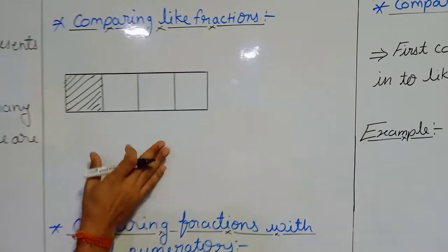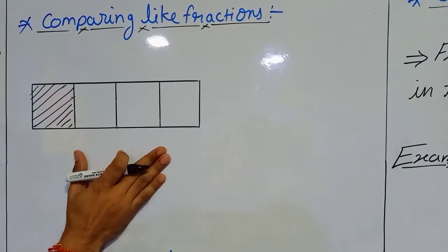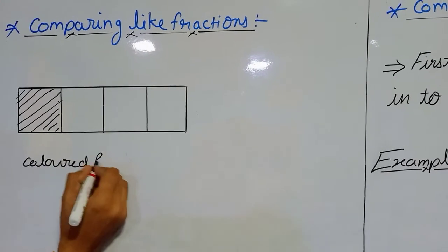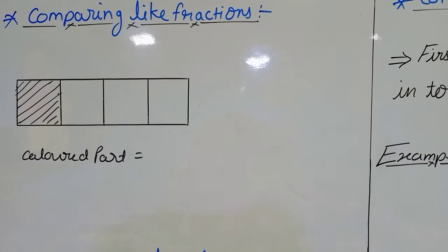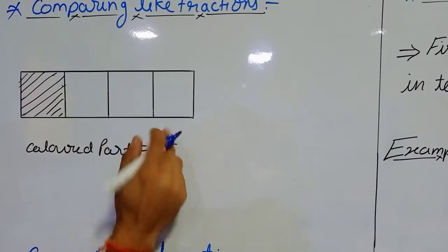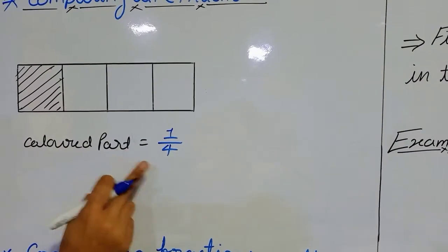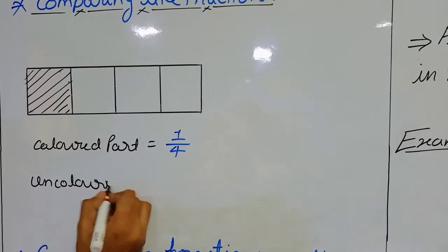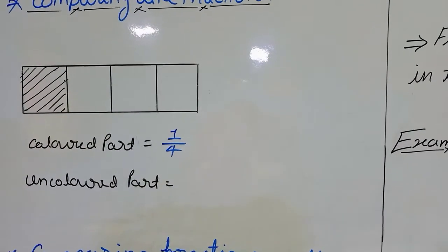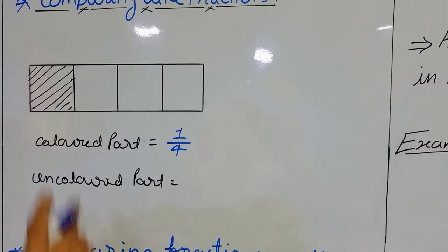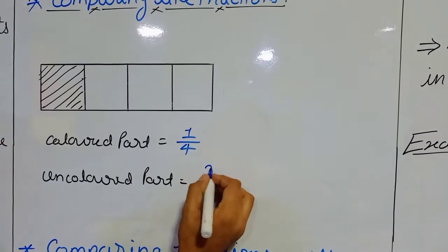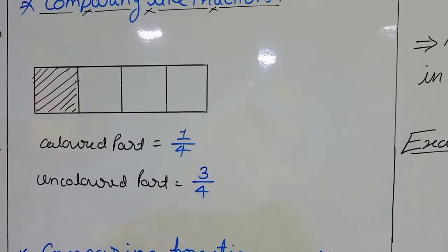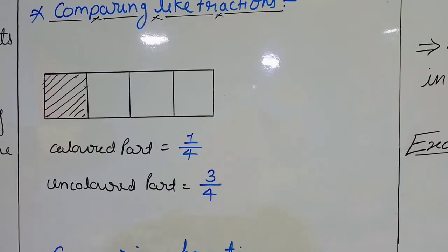For this kind of fraction, here we have an example. We have a strip divided into four equal parts. The colored part is equal to — the colored part is one, and the total is four — so we can say the colored part is 1 upon 4. The uncolored part is equal to — one, two, three — three parts are uncolored out of total four. So in these two fractions, if you are able to see, we have the same denominator, which means these two are like fractions.